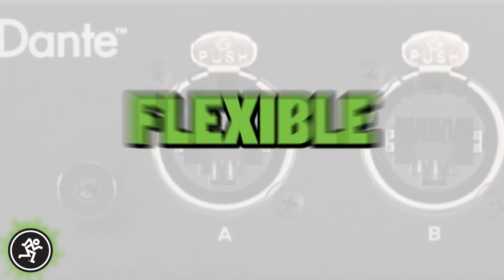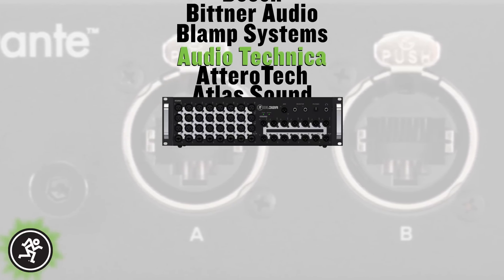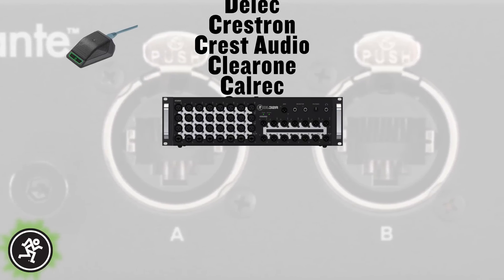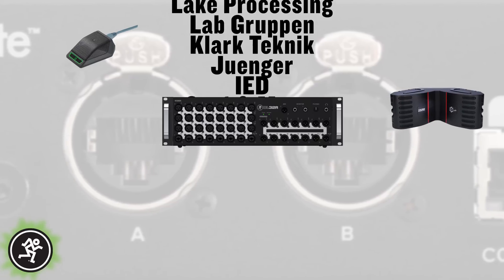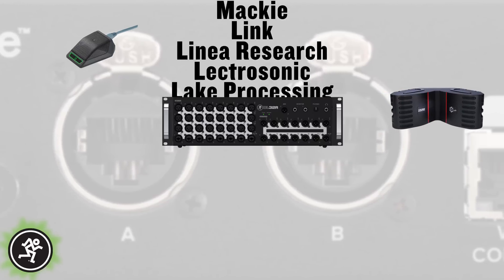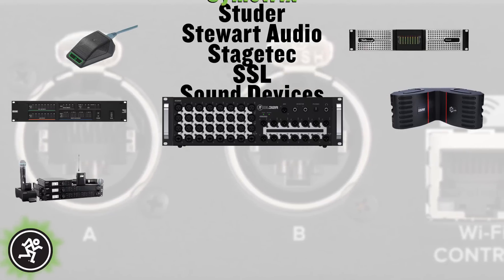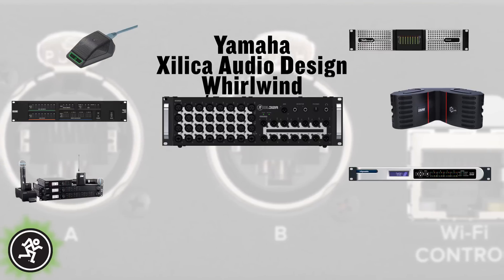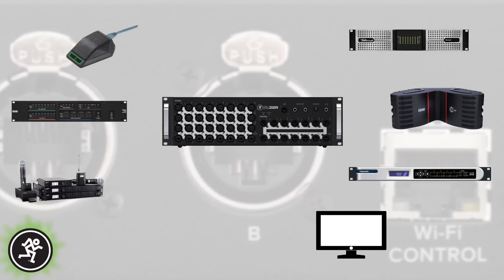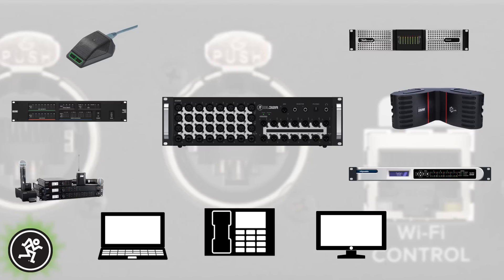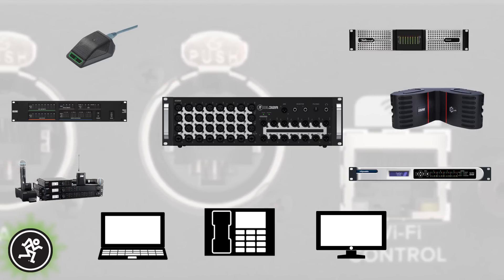Third, it's flexible. No other audio networking solution has been adopted by more pro AV manufacturers than Dante. The DL Dante expansion card allows the DL32R to communicate with hundreds of third-party devices from the world's leading audio manufacturers using a standard Ethernet network. That same network can also carry video, data, control and monitoring without additional cabling or the fear of latency and bandwidth issues.